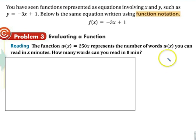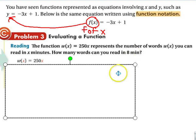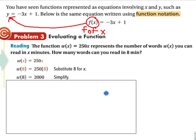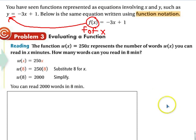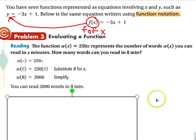Now, something called function notation. Basically, what we have is y is equal to negative 3x plus 1. And all we do is we replace y with that. It's just a different way of writing. It's kind of like Set Builder. It's more formal. So, then we get difficult questions like this. The function w of x, that's how we read this. We read this as saying f of x. So, this is w of x is equal to 250 times x. It represents the number of words w of x you can read in x minutes. How many words can you read in 8 minutes? So, we have our equation w of x. This represents x. So, we're going to plug it in. We solve it. So, we can read 2,000 words in 8 minutes.